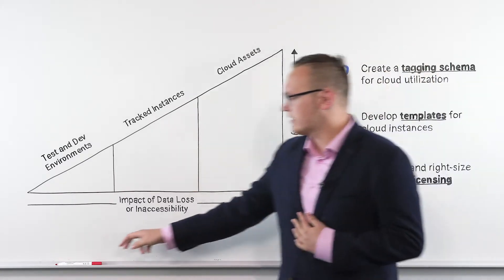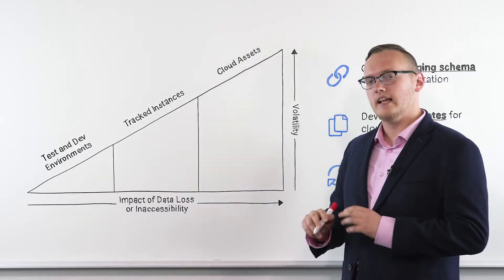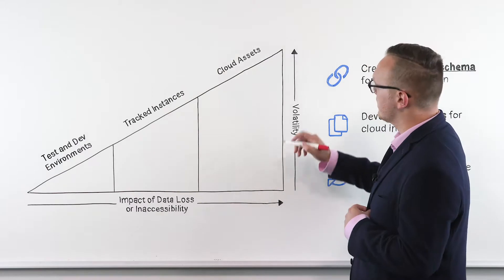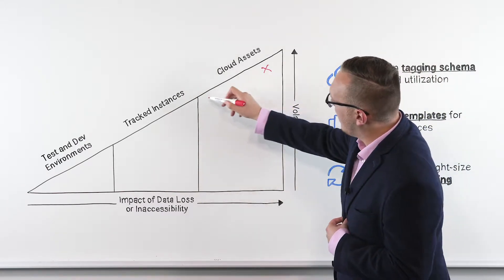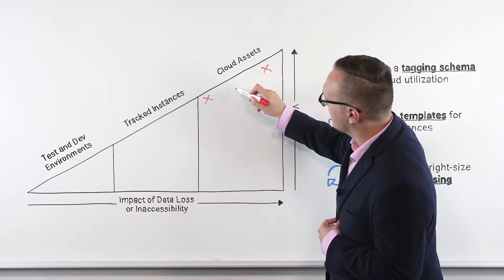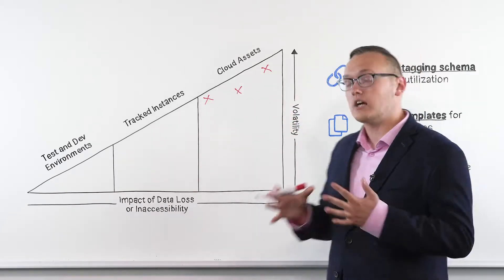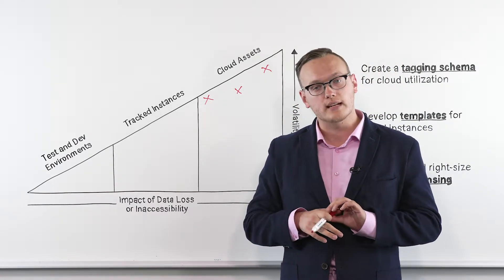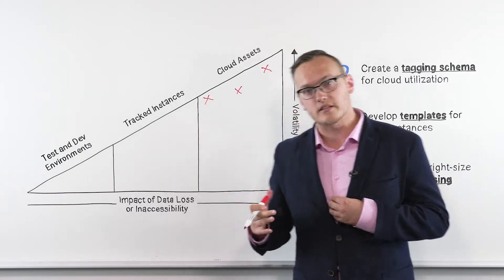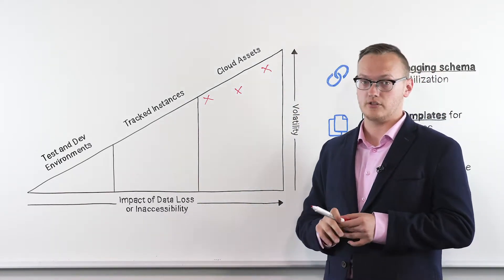So we break up the concept of cloud asset into two separate categories. There are those instances that are going to be highly volatile. We're looking at production environments for strategic projects or any production environments associated with strategic programs for the organization.